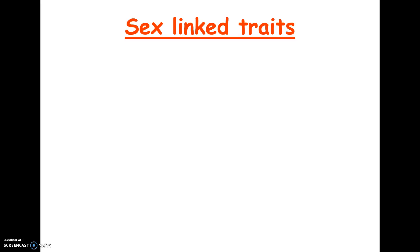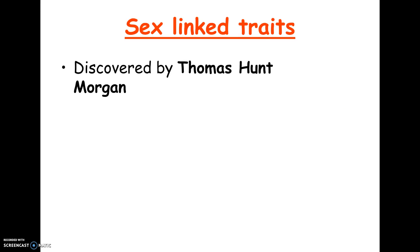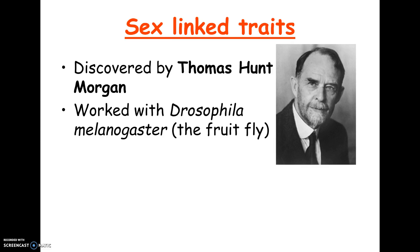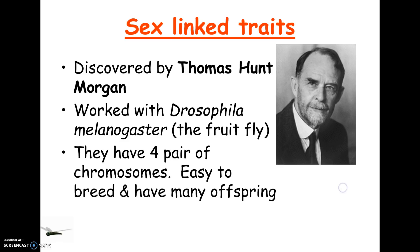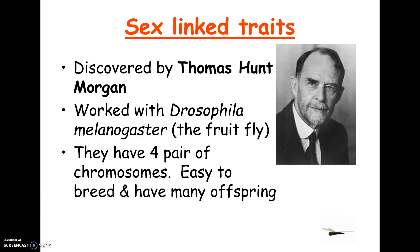That brings us to something that is new: sex-linked traits, discovered by Thomas Hunt Morgan. You don't have to know his name, but fruit flies are a great organism for genetics crosses — that's what he worked with. They only have eight total chromosomes, four pairs. They're easy to breed, you can fit 100 in a tiny vial, their life cycle is only about 14 days, and one female can lay 100 eggs after mating once. So you can make lots of offspring in a short period of time.